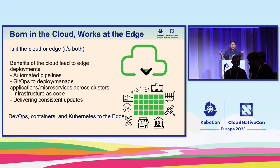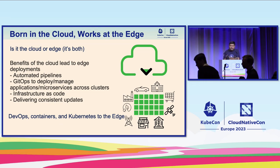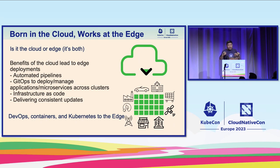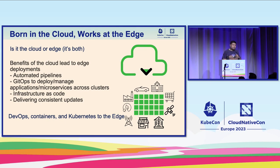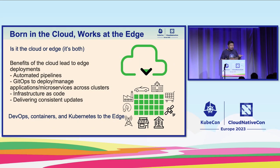Why are we talking about edge at KubeCon and CloudNativeCon? Because we are bringing CloudNative principles to the edge because of their benefits. We can plug in a device and turn it on, and everything should be automated to onboard. Ideally, we could take machines and turn them into Kubernetes clusters, manage the OS lifecycle in a declarative way, and tie into automated pipelines and GitOps to deploy applications across hundreds or thousands of devices.